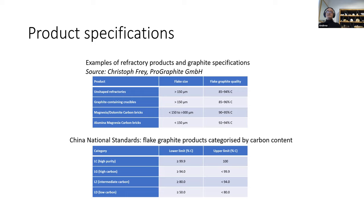On specifications, the first table is an example of refractory products and graphite specifications. Looking down the left-hand column, you can see the different types of refractory products including crucibles and refractory bricks. The middle column shows flake size, and the right-hand side shows purity. There's quite a tremendous range of both sizes and purity, so it really depends on the end user. Generally, these specifications are set between the supplier and the end user, as are the prices, which are not publicly available as a general rule.